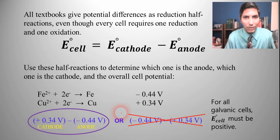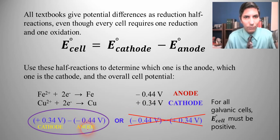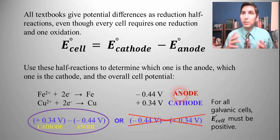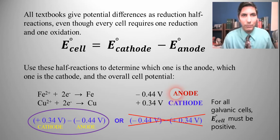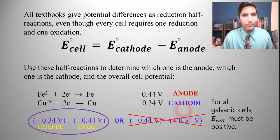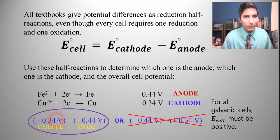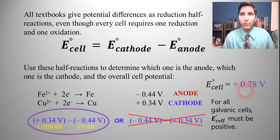So the correct arrangement is 0.34 minus negative 0.44, meaning 0.34 is the cathode — that's copper — and negative 0.44 is the anode — that's iron. The cat gets fat, so copper is the cathode and iron is the anode, which matches exactly what we said in the last video. The overall cell potential is 0.34 minus negative 0.44, which equals 0.78 volts.